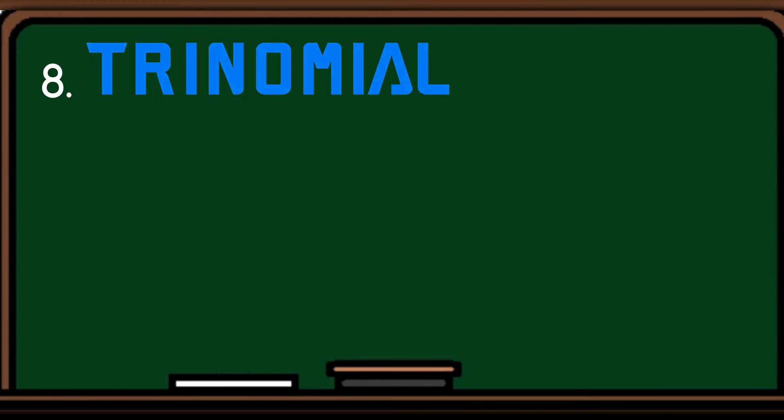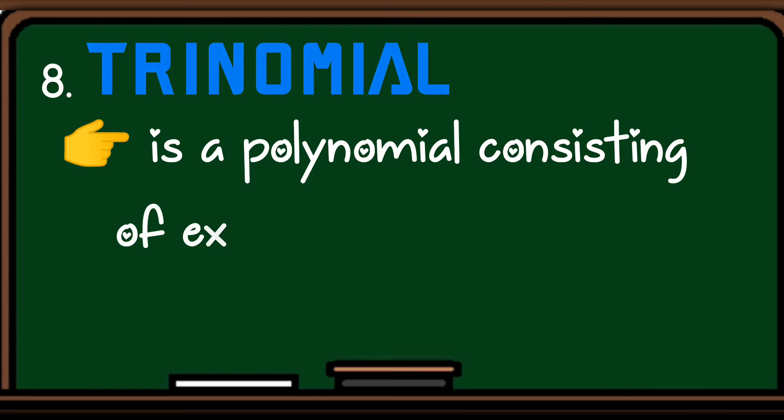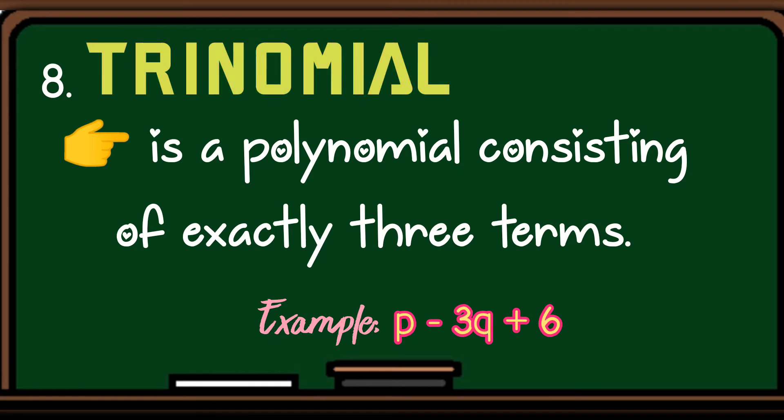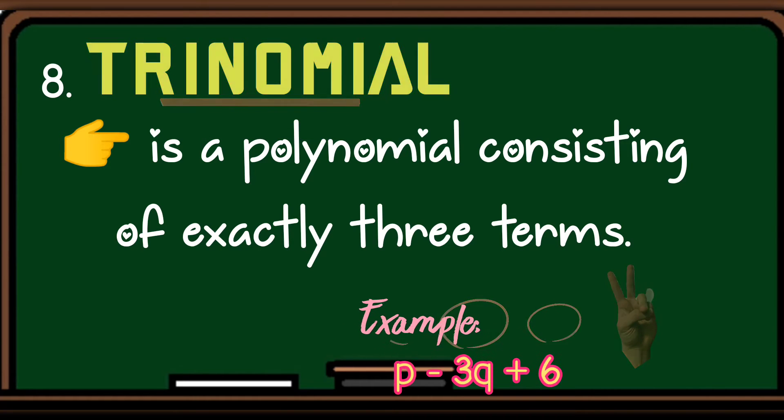Number eight, trinomial. A trinomial is a polynomial consisting of exactly three terms. Example, p minus 3q plus 6. Kaya siya tinawag na trinomial kasi tatlong term ang involved. The p, negative 3q, and positive 6.